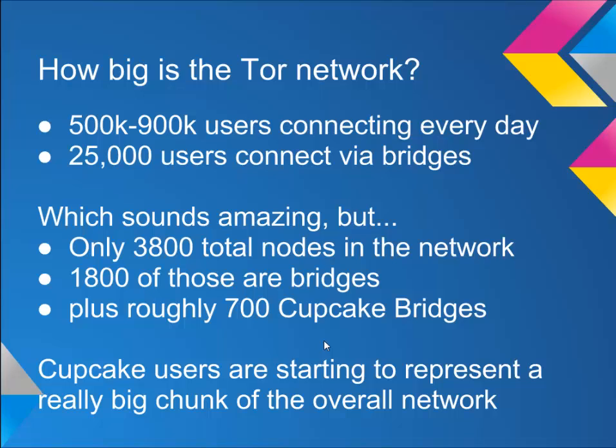So what is the data behind this? Right now the Tor network has between 500,000 and 900,000 users connecting every day, and that's not always the same group of users — someone could be connecting only once a week or once a month. We do know that 25,000 users connect every day via bridges, which sounds amazing, but there are only 3,800 total nodes in the network, and only 1,800 of those are bridges — not including roughly 700 bridges created through various Cupcake applications and extensions.